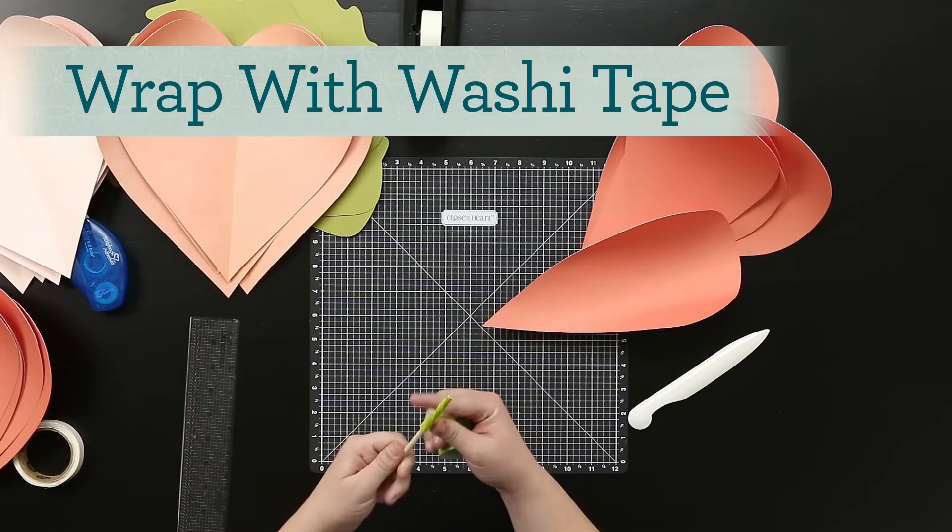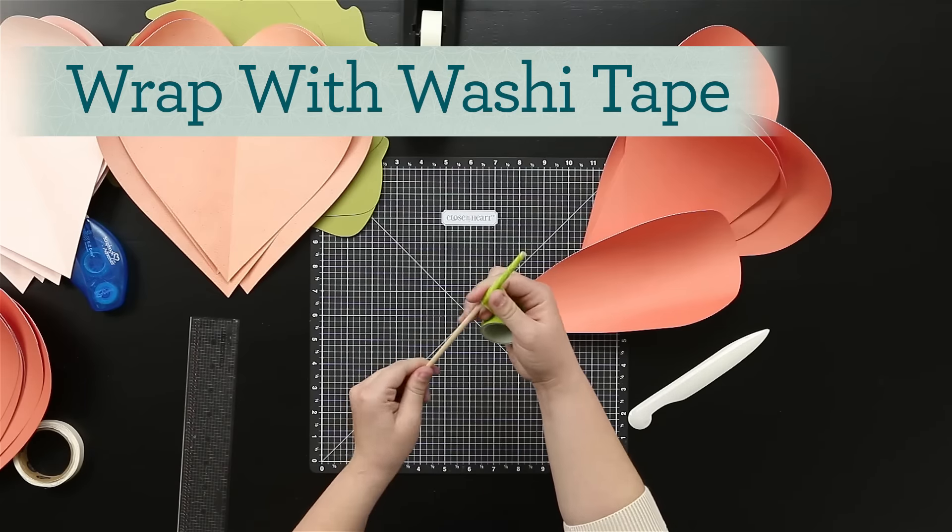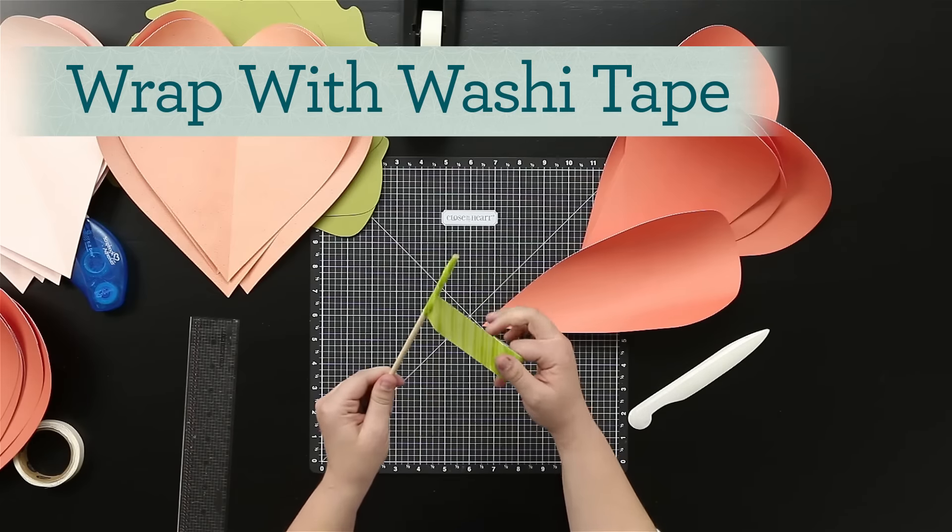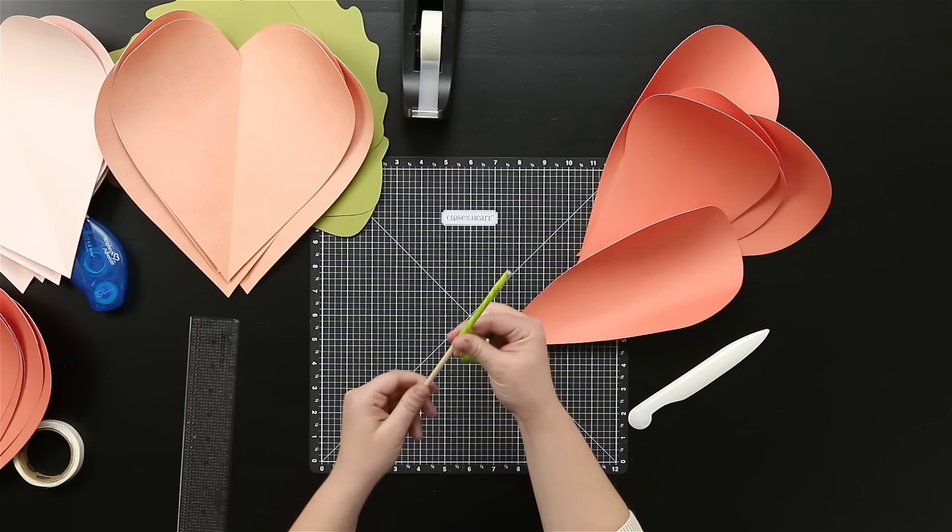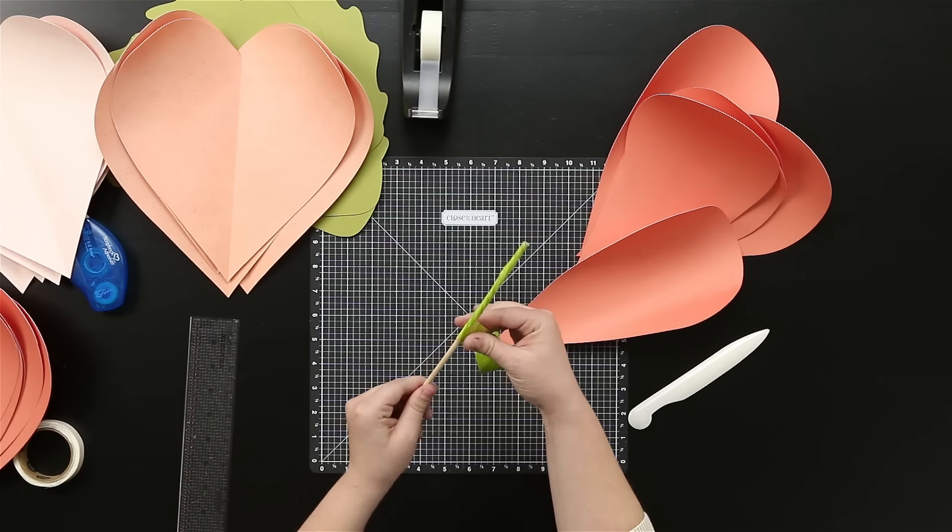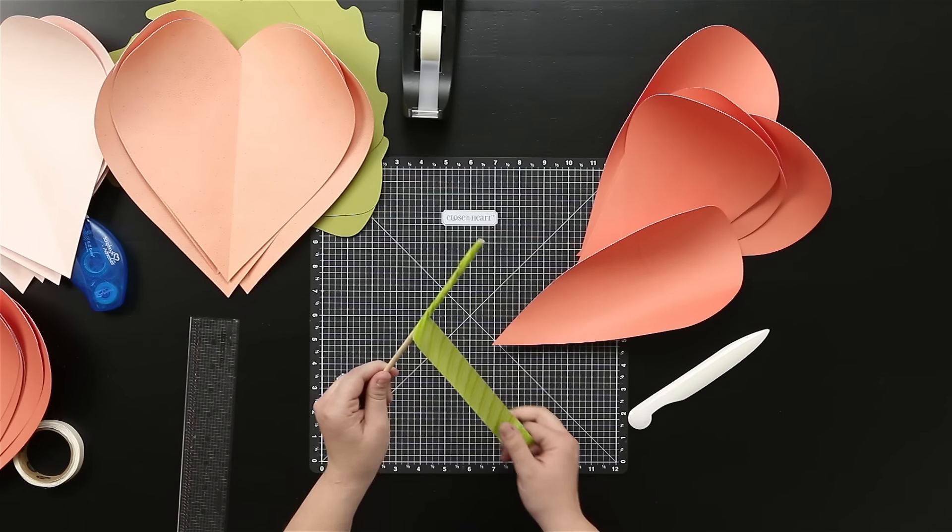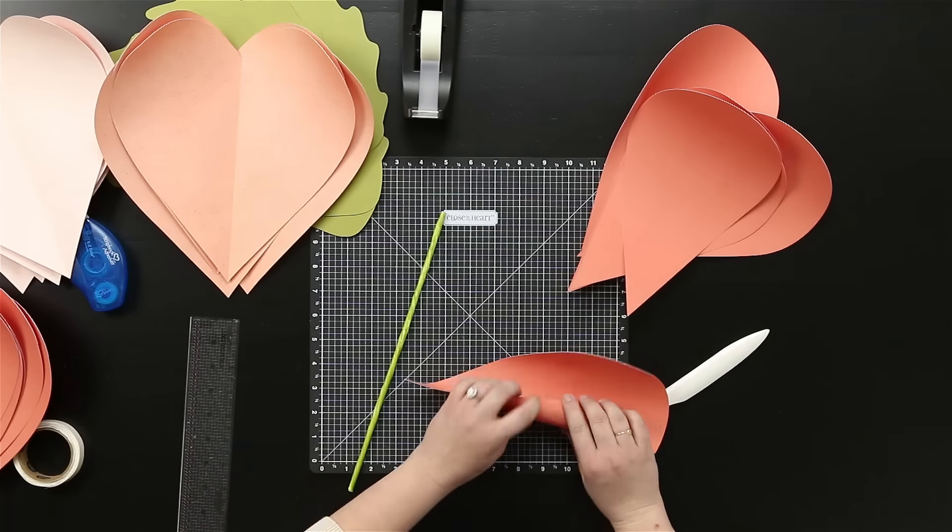Now I've got some washi tape and I'm going to use the Limeade washi tape. And I'm going to put that around my skewer so that my skewer looks like a stem. So the Limeade is a perfect color match. So I'll just keep wrapping that around, there you can see.